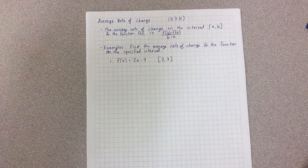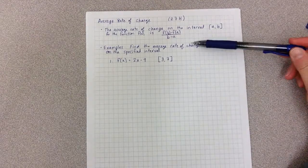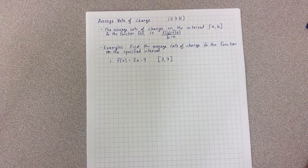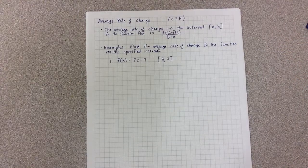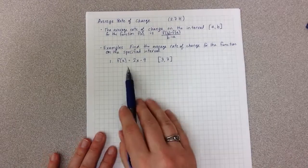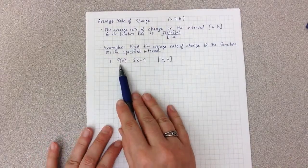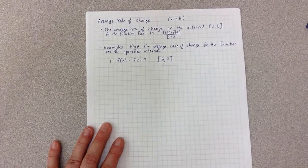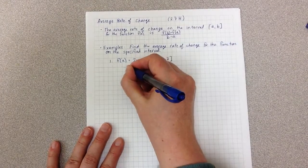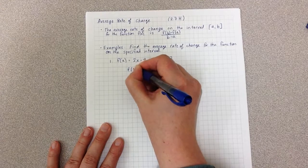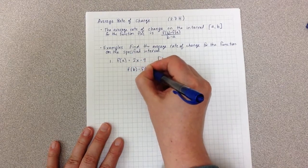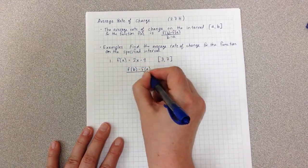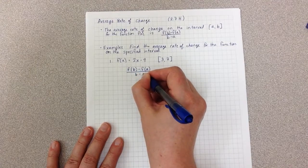So we're going to look at two examples. In both of these, we're going to find the average rate of change for the function on the specified interval. So in example one, we have a linear equation, so we're looking at f(x) equals 2x minus 9. So the first thing I'm going to do is write the formula: f(b) minus f(a) all over b minus a.